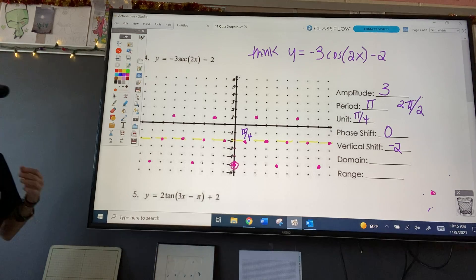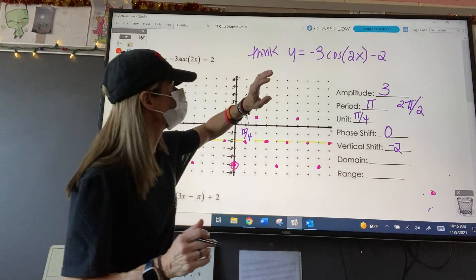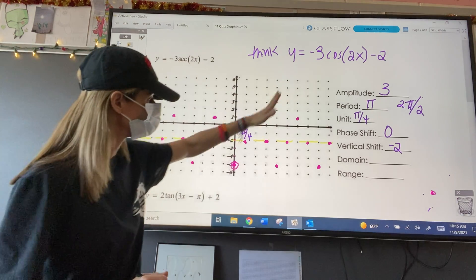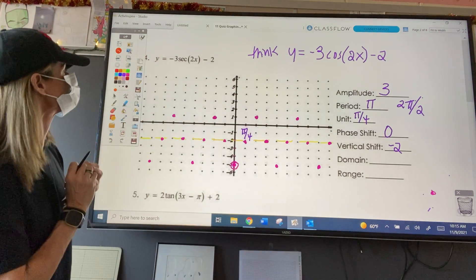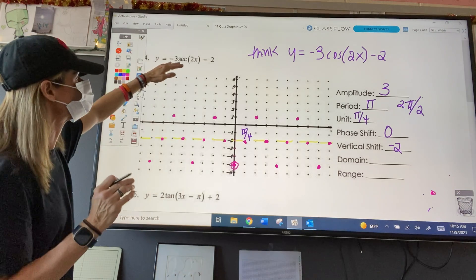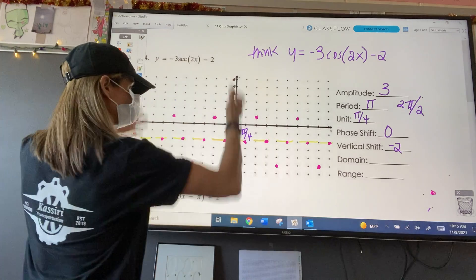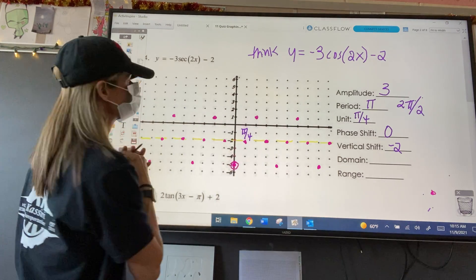Okay, so if we were graphing negative three cosine, this equation right here, we would just connect. Okay? However, we are not. We are graphing the reciprocal function. So, all of these zero points are going to become asymptotes. So, I'm going to draw those in first.